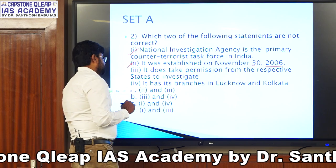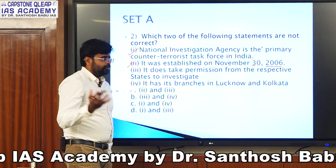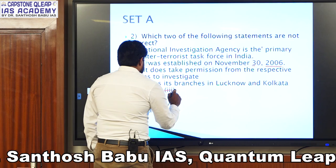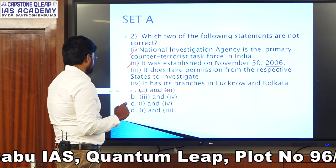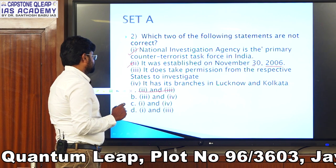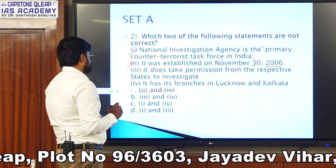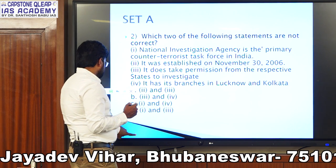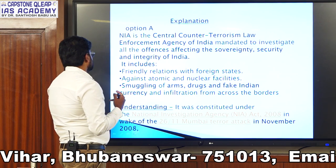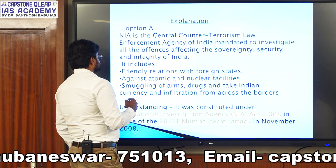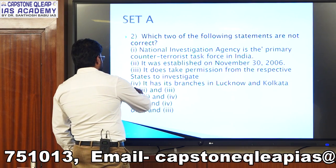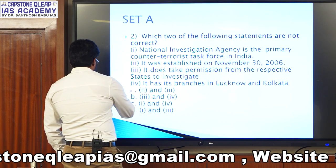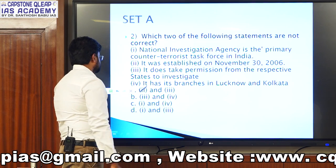Statement three: it does take permission from the respective states to investigate. Statement four: it has its branches in both Lucknow and Kolkata. Since option two says November 30, 2006 — but NIA was established after the 26/11 attack in 2008 — option two is wrong. Option two being wrong means we eliminate option A (statements 2 and 3). It does take permission from the states and does have branches in Lucknow and Kolkata. So the answer would be option A — statements 2 and 3 are the wrong ones.